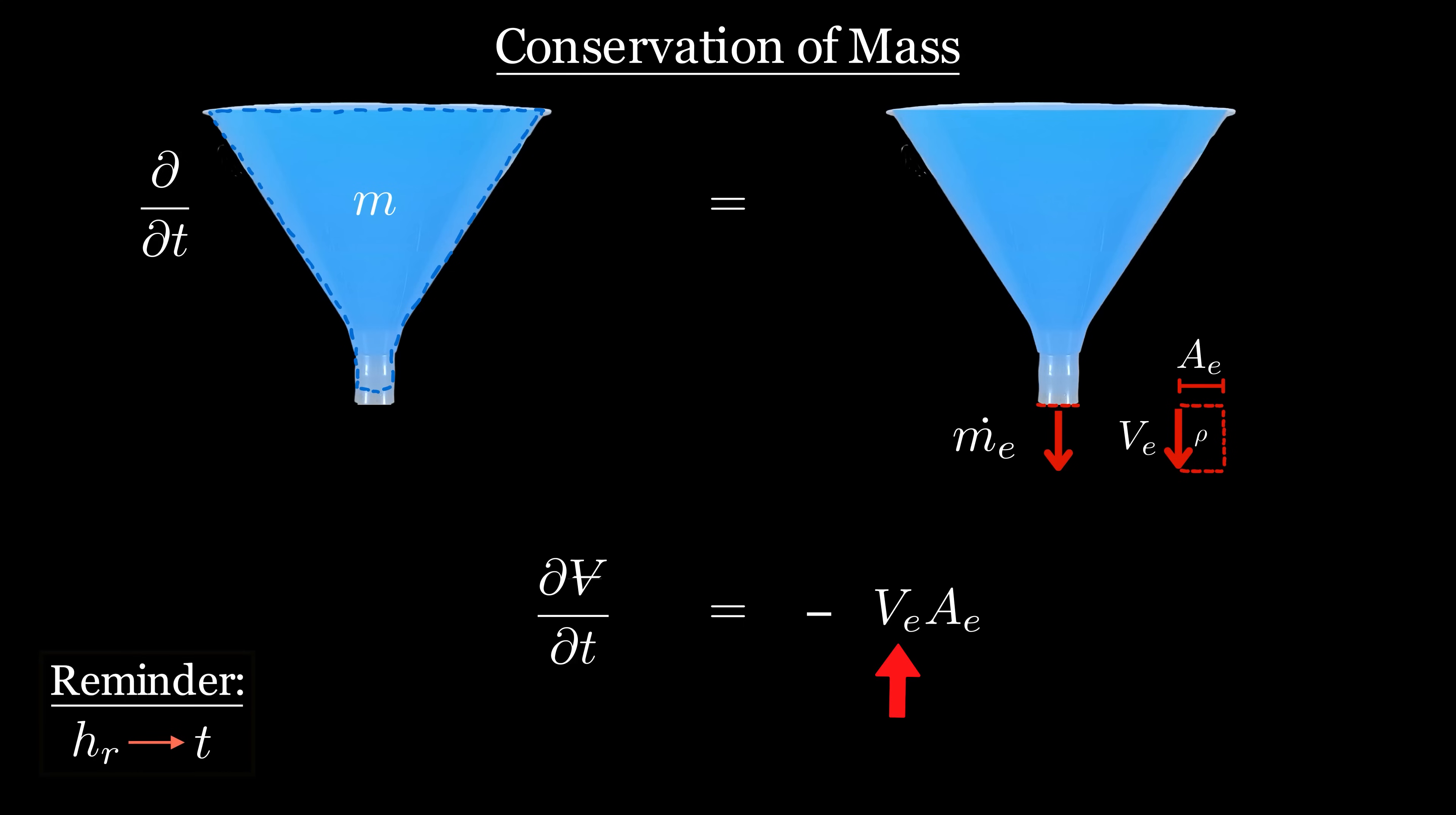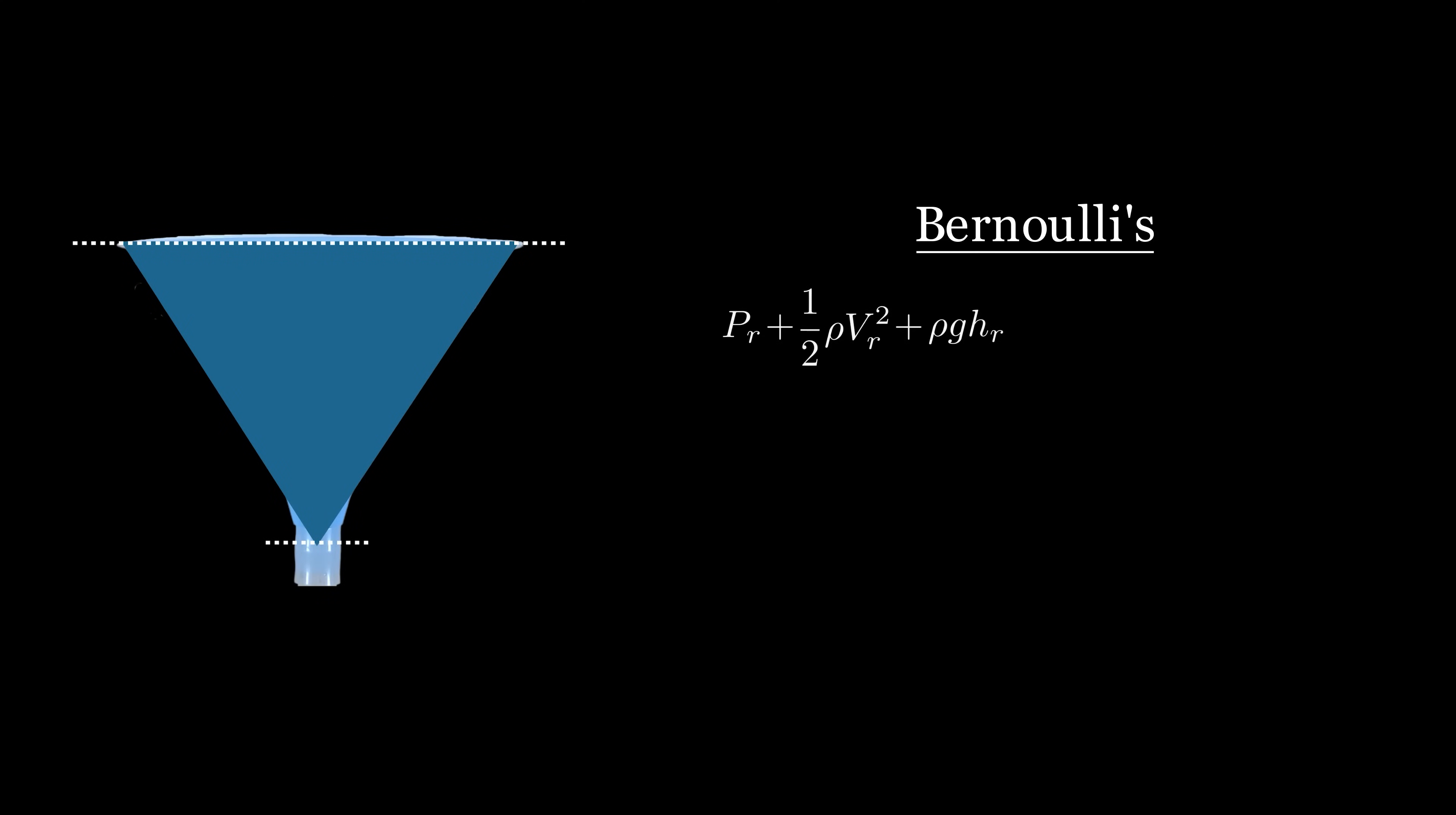To relate the velocity at the exit to the height of the water at all points in time, we can use Bernoulli's equation, which essentially compares the energy per unit volume at two different points in a flow, at the reservoir height and at the bottom of the funnel.